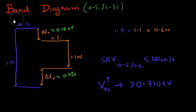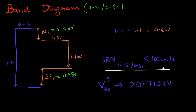We were talking about this heterostructure between amorphous silicon and crystalline silicon which is used in the HIT cell. I got a phone call in between so I had to cut short the previous video. Looking at this heterostructure, I mentioned that the surface recombination velocity at the interface between the amorphous silicon and crystalline silicon are usually pretty low. This interface is very well passivated and the surface recombination velocity is less than 100 centimeters per second.